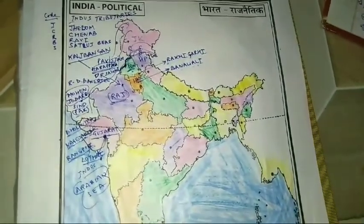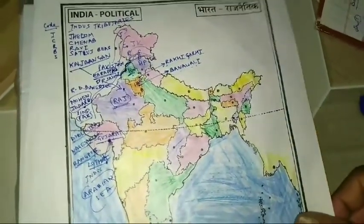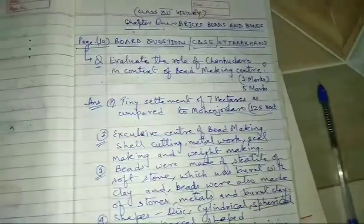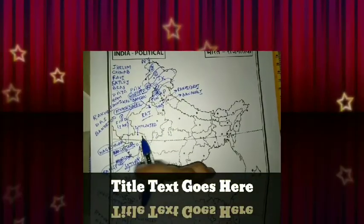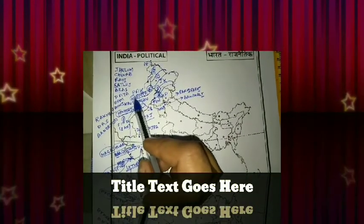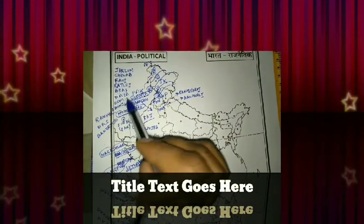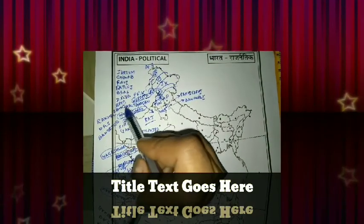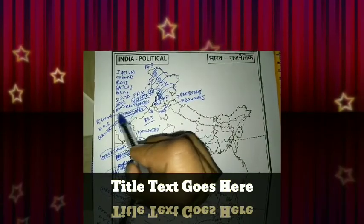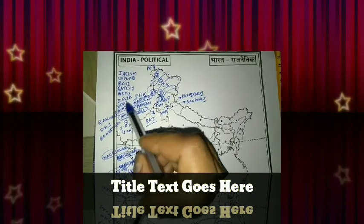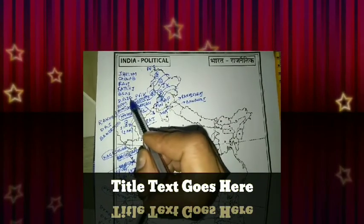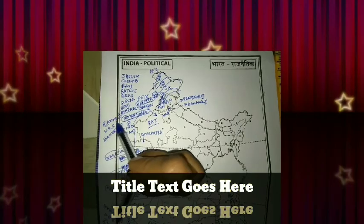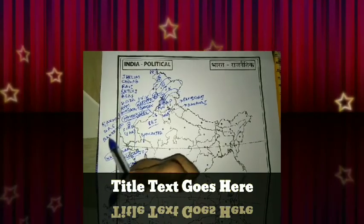So students, today we have discussed this map area also. One more point: Harappa was excavated or discovered by Daya Ram Sahni in 1920. And Mohenjo-daro city was excavated by Rakhal Das Banerji.